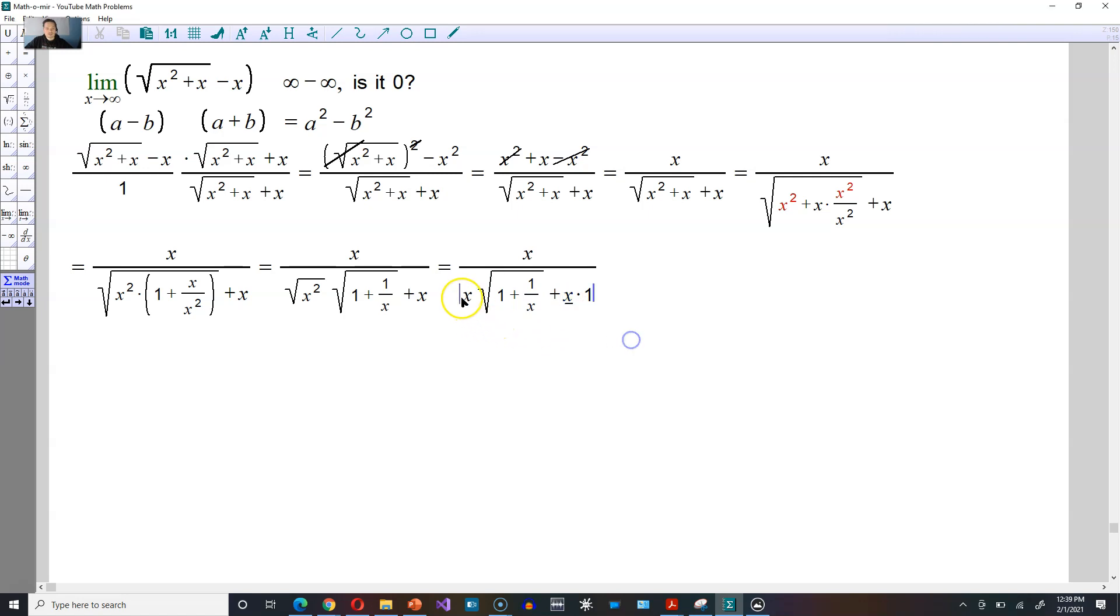So in other words this underlined x together with this other underlined x, those have to be factored out. So you're going to end up with x times 1 in the top and then the bottom you're going to have that x factored out. Within parentheses then you will have that square root of 1 plus 1 over x. And in the other position you would have plus 1 this way.